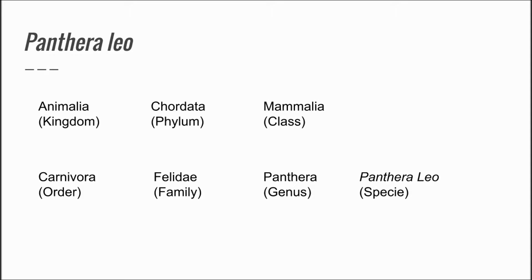Animalia means it hunts for food, so it's an animal. Chordata means it has a backbone — it's a vertebrate. Mammalia means it's a mammal with mammary glands. Carnivora means it's a carnivore that eats meat. Felidae are animals with retractable claws. Panthera means they can roar. So this animal is the lion.